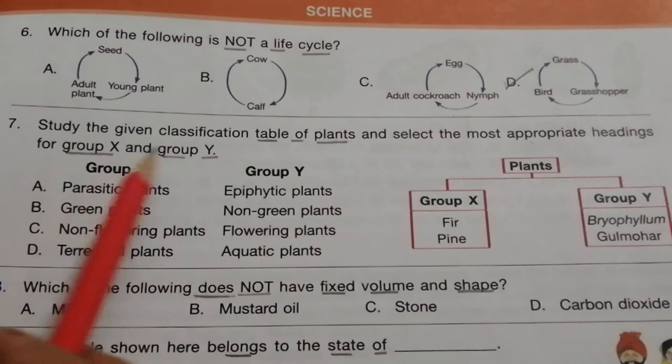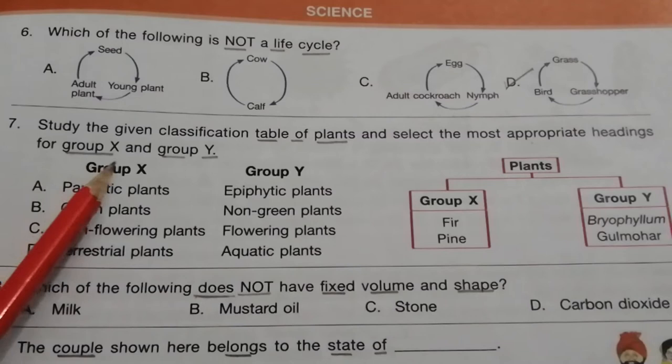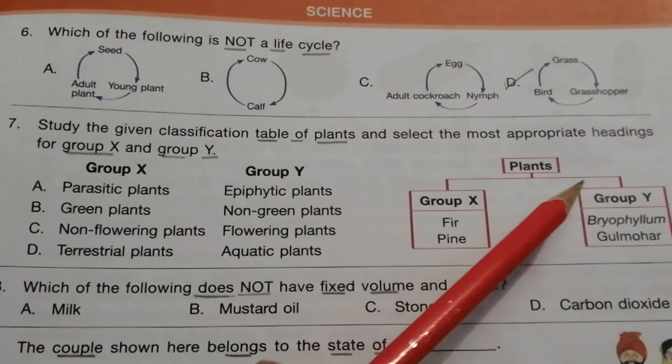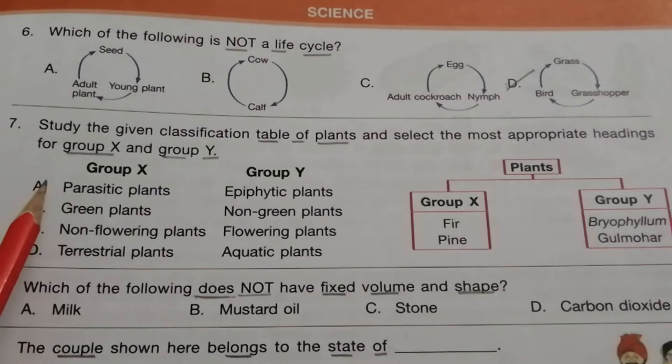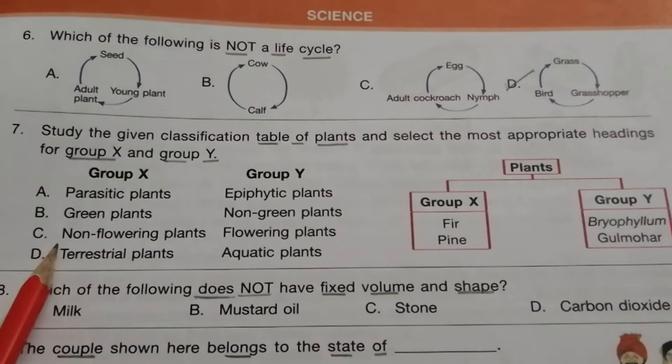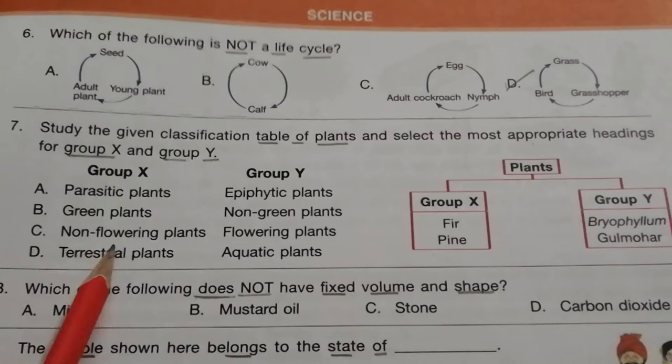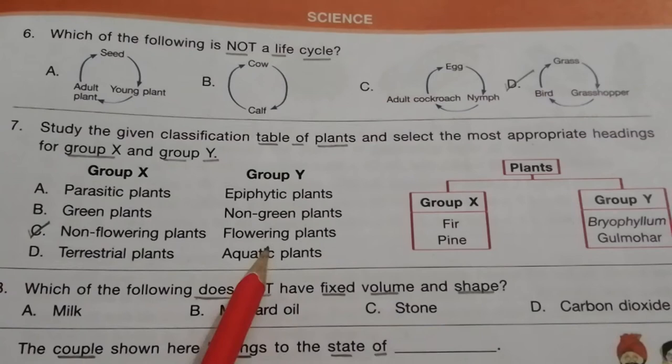Question 7: Study the given classification table of plants and select the most appropriate headings for Group X and Group Y. Group X contains fir and pine; Group Y contains bryophyllum and gulmohar. Fir and pine are non-flowering plants, so the answer is C: non-flowering plants and flowering plants.